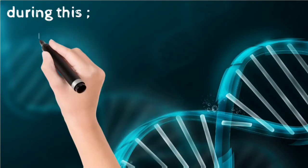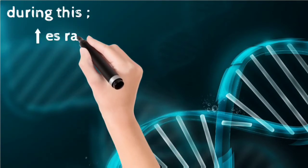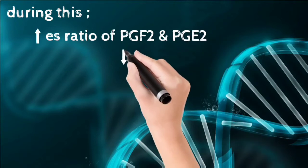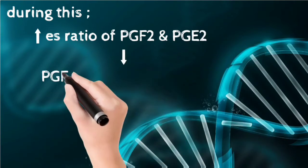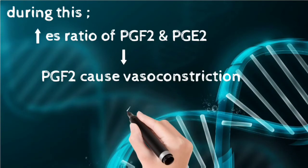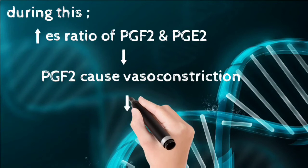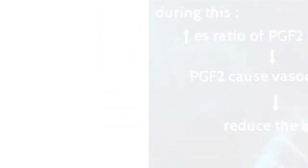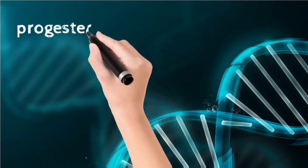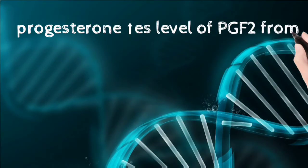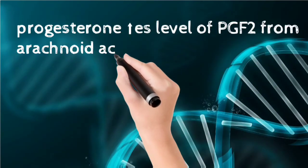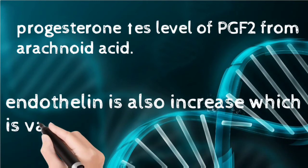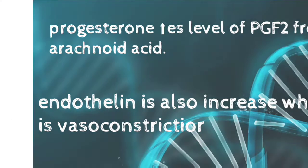During normal menstruation, there is an increased ratio of PGF2-alpha to PGE2. PGF2-alpha causes vasoconstriction and reduces bleeding. Progesterone increases the level of PGF2-alpha from arachidonic acid, and endothelin is also increased, which acts as a vasoconstrictor.